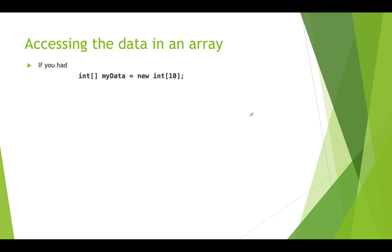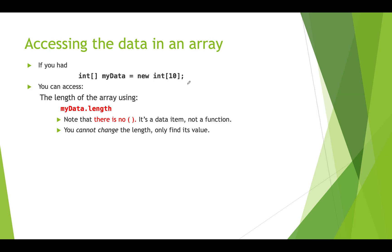Once you have an array with data in it, you might want to get that data out. If we have an array called myData that holds 10 ints, we can retrieve things from it. The things we can get include the length of the array — myData.length — which tells us how many slots or bins it has. Arrays are objects, and length is a data item. You can never change the length once an array is created, but you can find out how many slots there are.